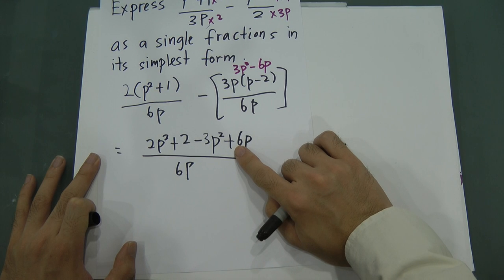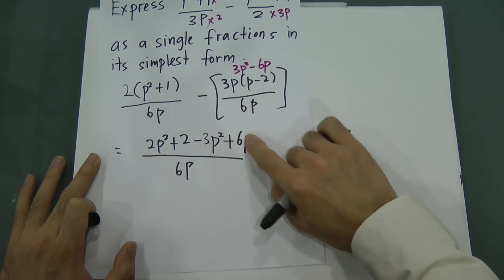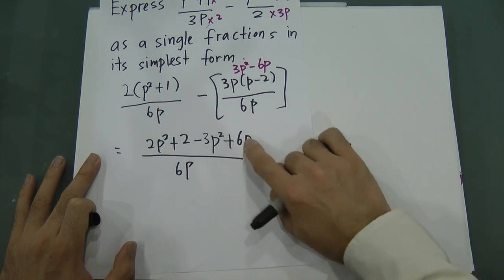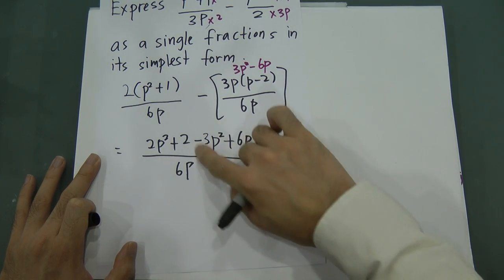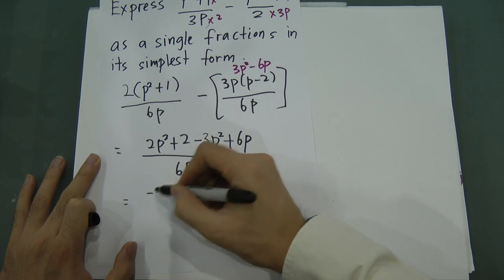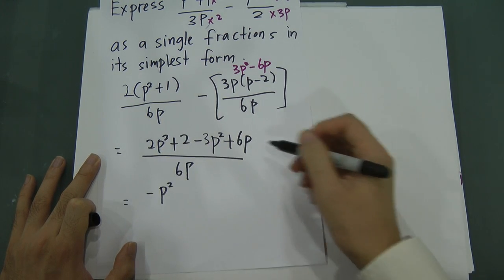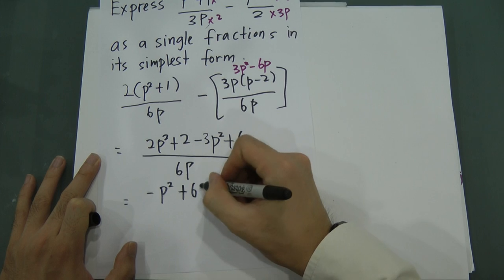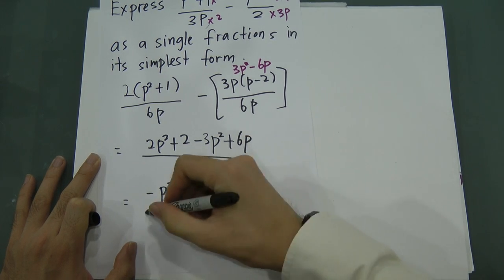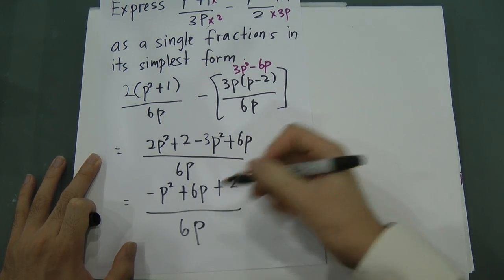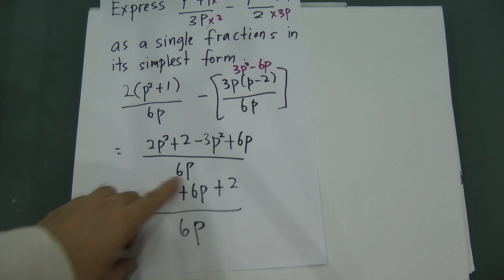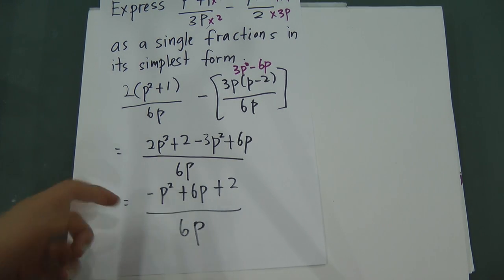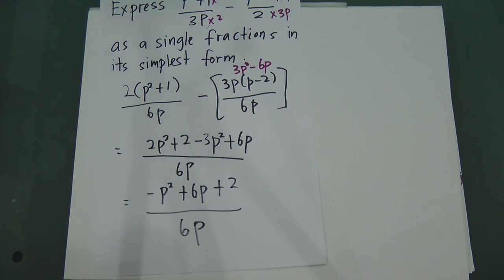Note that p-squared and p cannot be added or subtracted — only multiplied or divided. Combining like terms: 2p-squared minus 3p-squared gives negative p-squared, plus 6p plus 2, all over 6p. This is the simplest form since it cannot be simplified further.